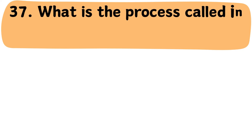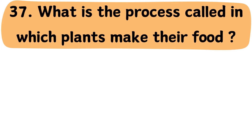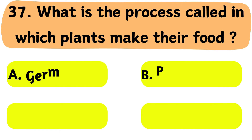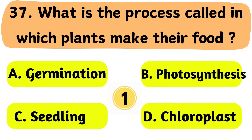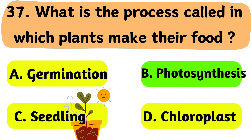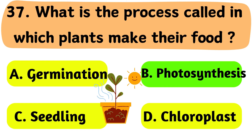Question No. 37: What is the process called in which plants make their food? A. Germination. B. Photosynthesis. C. Seedling. D. Chloroplast. The correct answer is Option B: Photosynthesis.